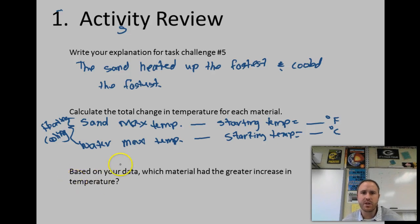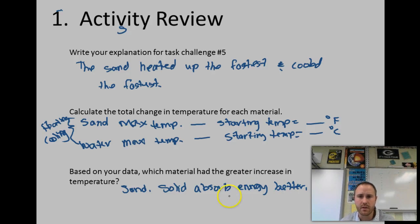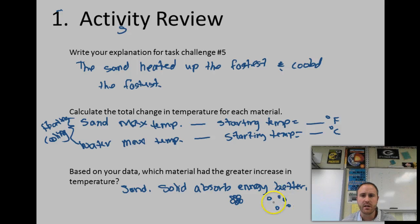Question three said: based on your data, which material had the greater increase in temperature? The greatest increase probably would have been the sand, and the reason for that is it is a solid. Solids absorb energy better. The main reason is that in a solid, the particles are closer together — they're already vibrating, but when the sun strikes them they vibrate faster, holding in more energy. In a liquid the particles are more spaced out, so they collide less frequently, meaning the sand absorbs energy better.